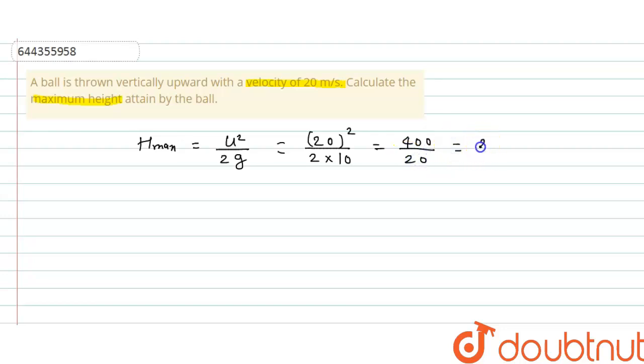So this is equal to 20 meter. If we take 9.8, then value will change, okay. But concept is same, H max is equal to u square by 2g.